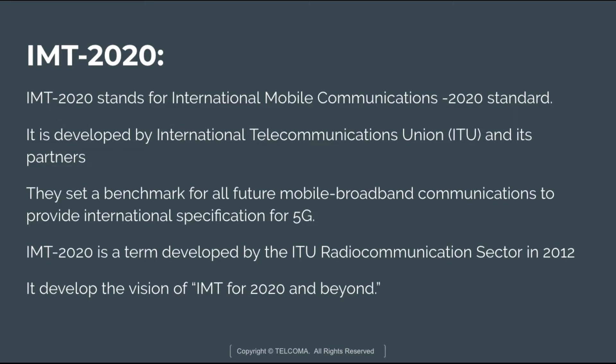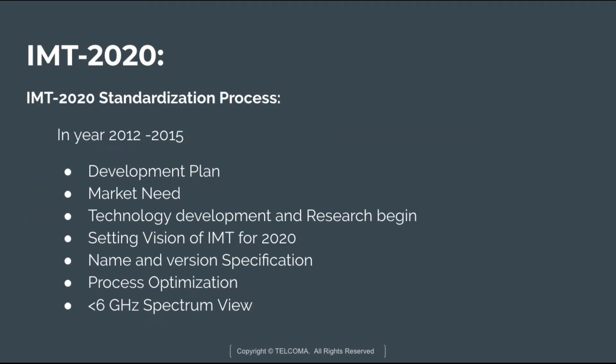IMT 2020 is a term developed by the ITU Radio Communication Sector in 2012, and it developed the vision of IMT for 2020 and beyond. The ITU has set a timeline that calls for the standards to be finished in 2020, and the name IMT 2020 follows the same naming structure as IMT 2000 for the 3G and IMT Advanced for the 4G.